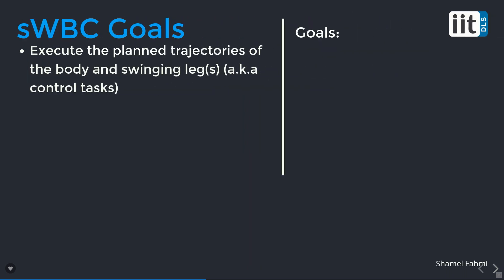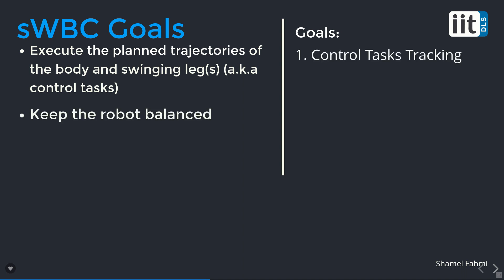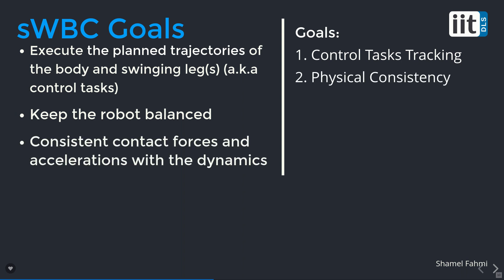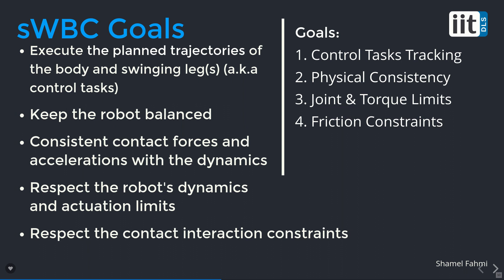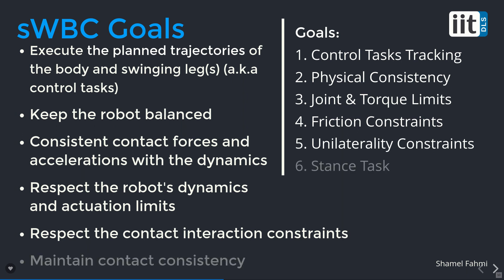The main objectives of the whole body control are as follows. The first goal is to execute the planned trajectories of the body and the swinging legs while keeping the robot balanced — we call these control tasks. Second, we need to ensure that accelerations and contact forces respect the unactuated part of the dynamics, which we refer to as physical consistency. We also need to respect the actuated dynamics and joint and torque limits, as well as contact constraints defined by friction and unilaterality constraints. Finally, and of specific importance to us, is to remain contact consistent — meaning stance feet must be in contact with the ground, which we refer to as the stance task.